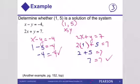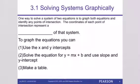So (1, 5) is a solution to the systems of equations. If you graph these two equations, the point where the two lines cross would be (1, 5).